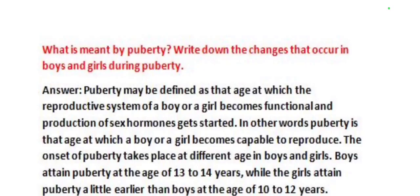Our next question is: what is meant by puberty? Write down the changes that occur in boys and girls during puberty. Puberty may be defined as that age at which the reproductive system of a boy or a girl becomes functional and production of sex hormones gets started. In other words, puberty is that age at which a boy or a girl becomes capable to reproduce. Boys attain puberty at the age of 13 to 14 years, while girls attain puberty a little earlier, at the age of 10 to 12 years.